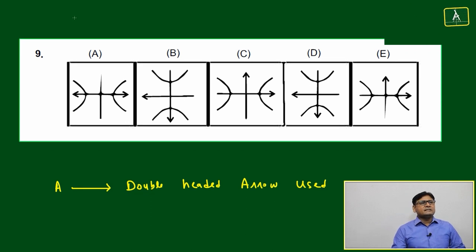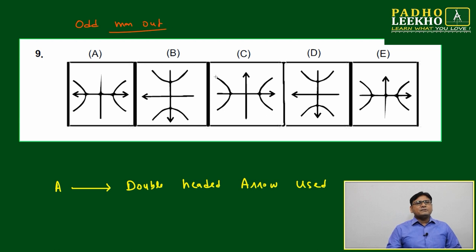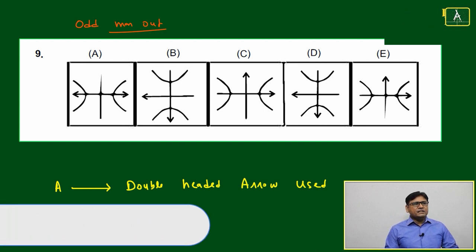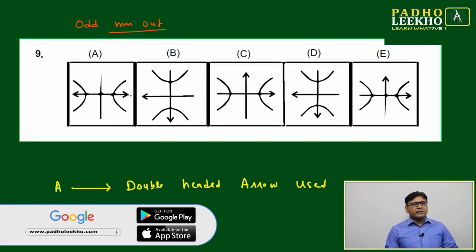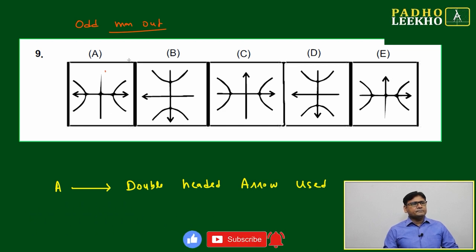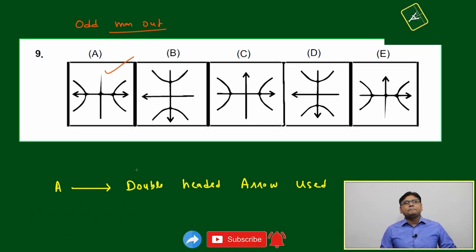Question number nine: this is odd man out based, meaning out of these five, one is not following exactly what the other four are following. How to observe very fast? Where do we have to look? Just look at the number of lines. That is one of the best identifications. Like option A, it is using a double-headed arrow. Option B: single-headed. Option C: single-headed. Option D: single-headed. Option E: single-headed. Who is odd man out? Option A. Why? Because you are using this one, this is differentiating from the remaining four.